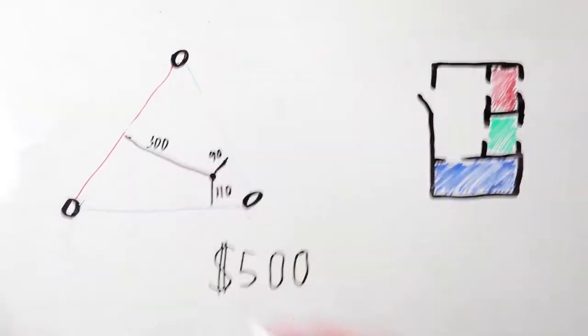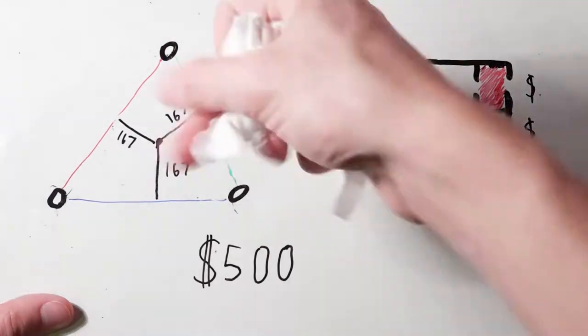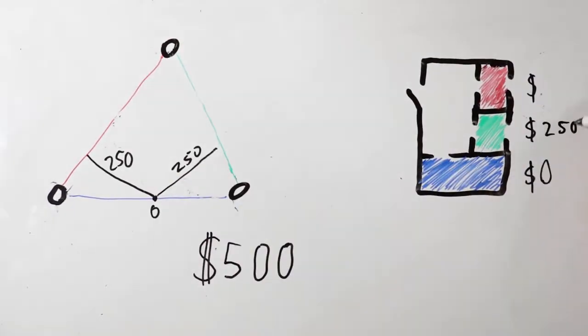For example, a point closer to the blue and green edges would give those rooms cheaper prices than the red, while a point in the middle would have equal prices for all three. Finally, a point on an edge would have that room's price be free.